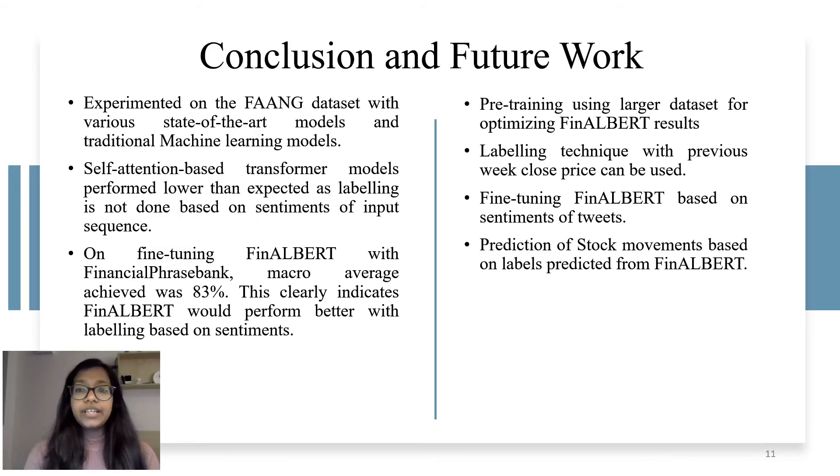Let's move ahead with conclusion and reflection for the project. We experimented on FANG dataset with various state-of-the-art models like BERT, FinBERT, embeddings with BiLSTM, and CNN. Traditional machine learning models like Naive Bayes, logistic regression, and random forest classification were also experimented with. We learned that self-attention-based transformer models performed lower than expected because labeling was not done based on sentiments but stock price changes.